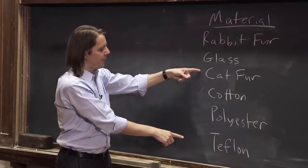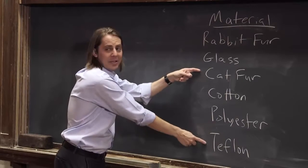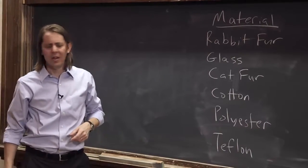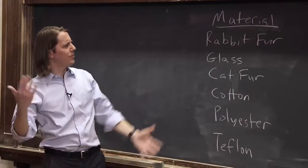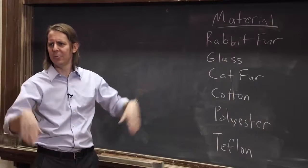If we rubbed cat fur and Teflon, so Teflon's at the bottom, it came out negative. Cat fur's at the top, it came out positive. The lists are always kind of weird. There's always different kinds of fur, and rabbit's always above cat, and nobody knows what's going on.